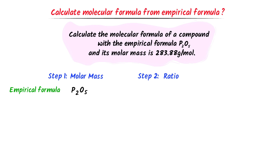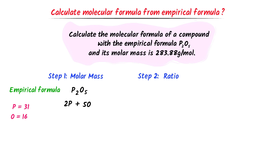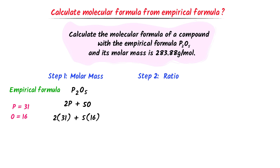We can see that there are two atoms of phosphorus and five atoms of oxygen. I add them all. The molar mass of phosphorus is 31 gram and that of oxygen is 16 gram. So I write 2 × 31 plus 5 × 16. After adding them, I get 142 gram per mole. Thus the molar mass of P2O5 is 142 gram per mole.